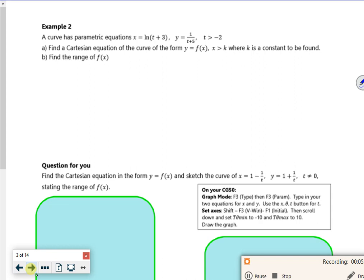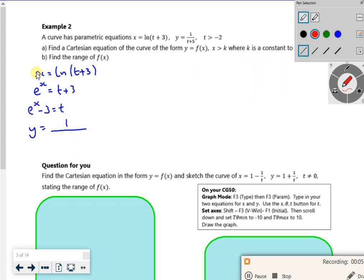Look at this next question. The curve has parametric equations x equals ln(t+3), y equals 1 over (t+2). Find the Cartesian equation. I've got x is log t plus 3, I want to get rid of t. To make t the subject, I need e. So e to the x is t plus 3, e to the x minus 3 equals t. I'm going to replace the t on the bottom with e to the x minus 3. So I've got y equals 1 over e to the x plus 2. All I've done is replaced t with e to the x minus 3.